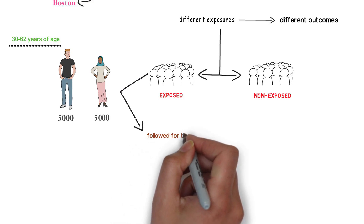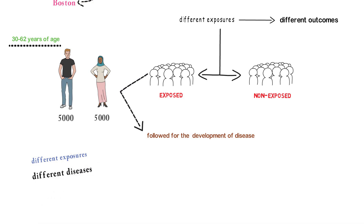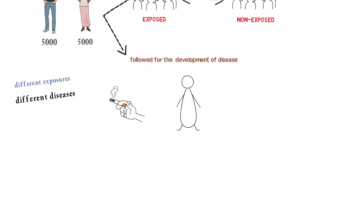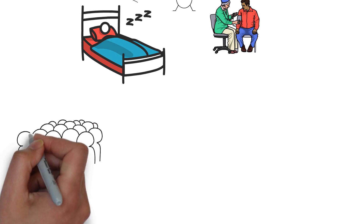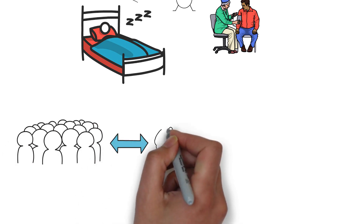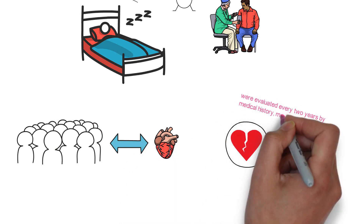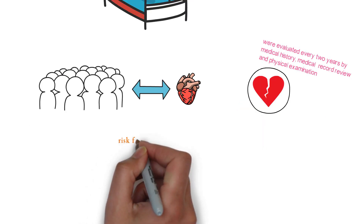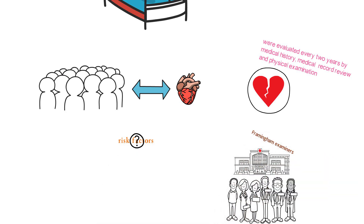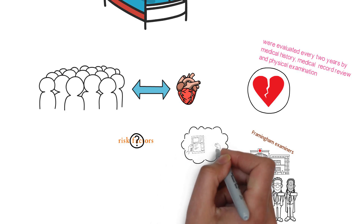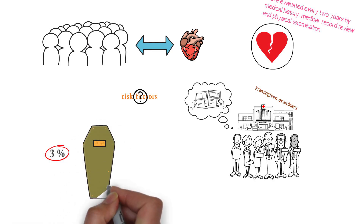Many exposures were defined such as smoking, obesity, elevated blood pressure, elevated cholesterol levels, and low level of physical activity. New coronary events were identified by examining the population every two years and by daily surveillance of hospitalization. Risk factors in the development of cardiovascular events were evaluated every two years by medical history, medical record review, and physical examination. All diagnoses were verified without knowledge of risk factors by Framingham examiners who reviewed medical records and death certificates. Approximately three percent of subjects were lost to follow-up for mortality during the first 45 years of the study.